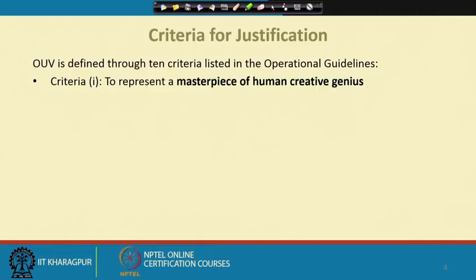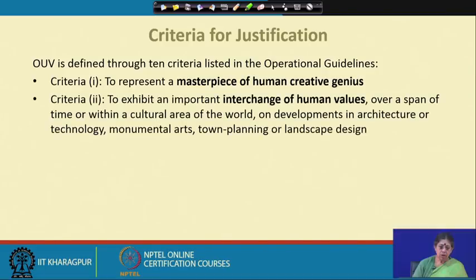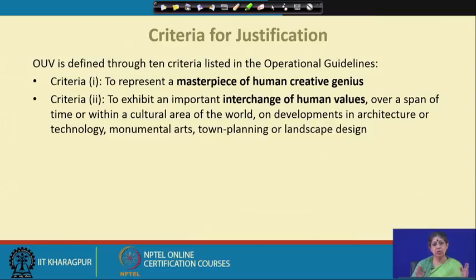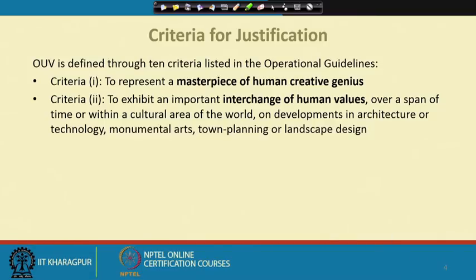Criteria one: to represent a masterpiece of human creative genius. Criteria two: to exhibit an important interchange of human values — so it can be over a span of time or within a cultural area of the world — on developments in architecture or technology, monumental arts, town planning, or landscape design. Whereas the first one emphasizes creative genius, the second one emphasizes the interchange of human values.